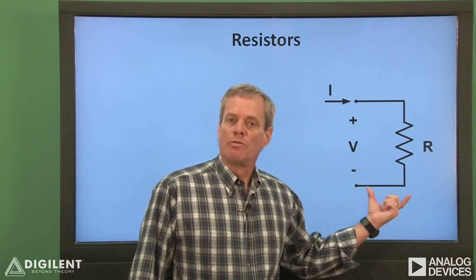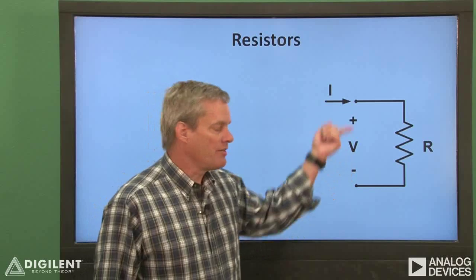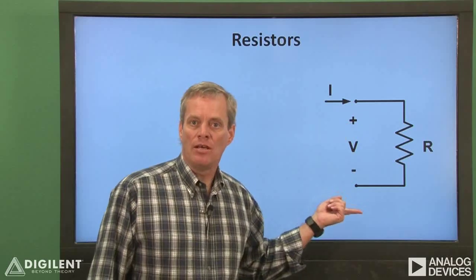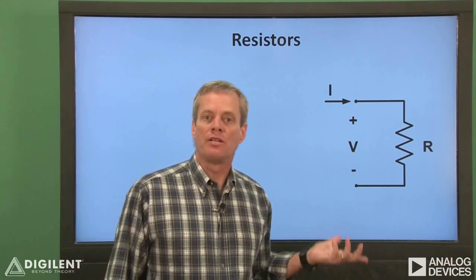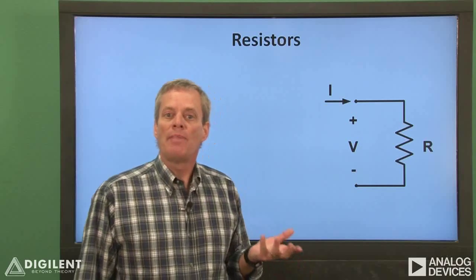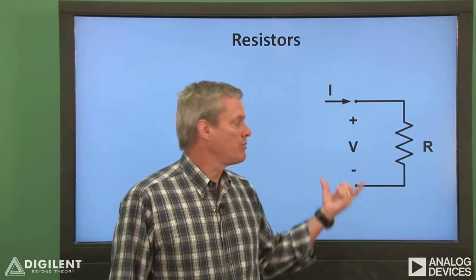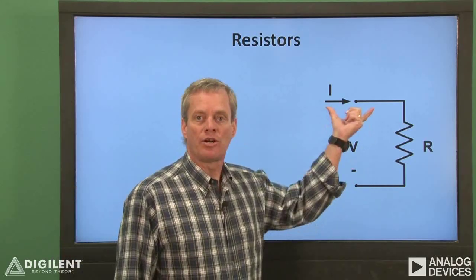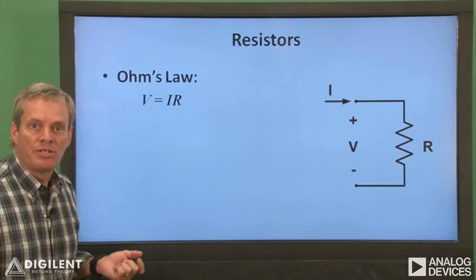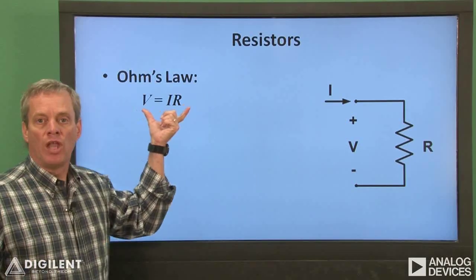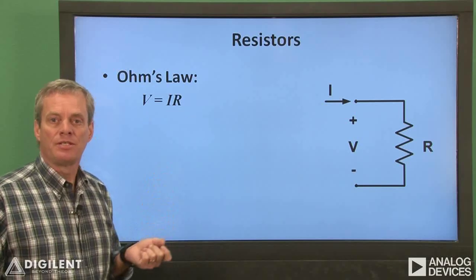This is the symbol we'll use for a resistor. Resistors can typically have some voltage difference, V, across their terminals, and a current, I, entering the positive voltage terminal. Passive circuit elements are described by the relationship between voltage and current at their terminals. For resistors, this relationship is called Ohm's law: voltage equals current times resistance.